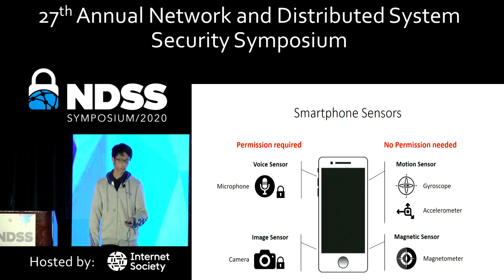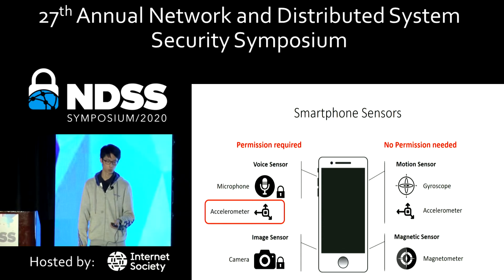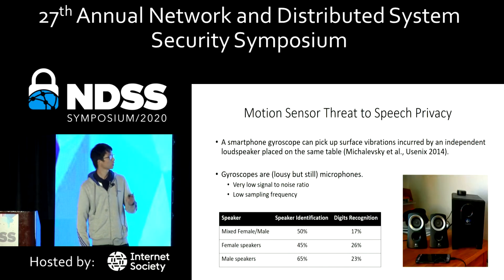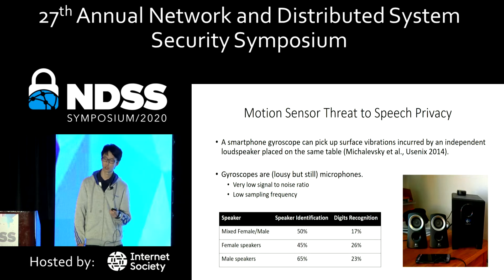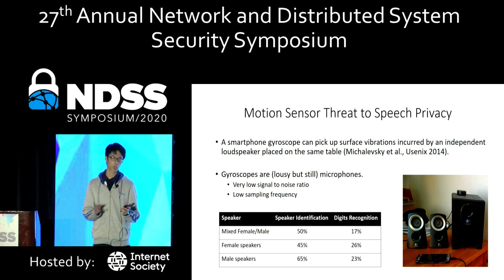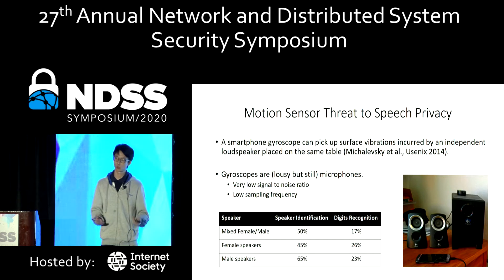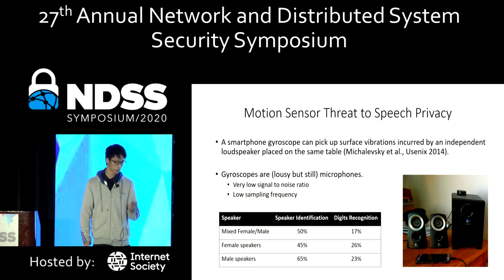Our work here is trying to show you that even the zero-permission accelerometer is also able to capture human speech voice. In literature, the Mikhailovsky team found that the smartphone's gyroscope sensor is able to capture the voice emitted from an independent loudspeaker placed on the same table. The reason is that voice is a type of vibration that transmits through a medium as an acoustic wave, and motion sensors are sensitive to this. But during transmission, the voice is severely attenuated and distorted, so the final result of this attack is really inaccurate.